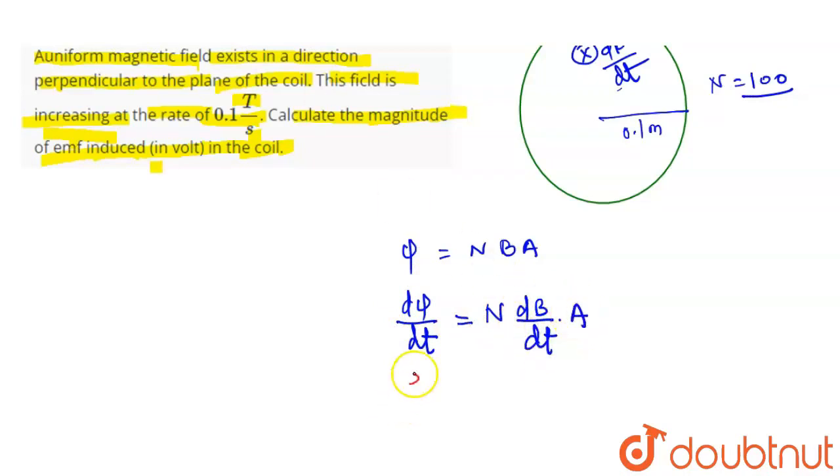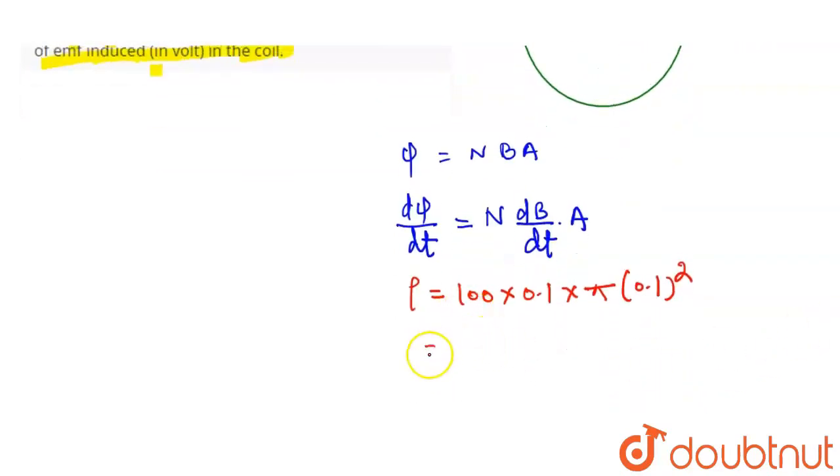Let's calculate the induced EMF. N is 100, dB/dt is 0.1, and the area is pi r squared, which is pi times 0.1 whole square. Solving this: 100 into 0.1 into pi into 0.01. That equals 0.314 volts. That is the correct answer.